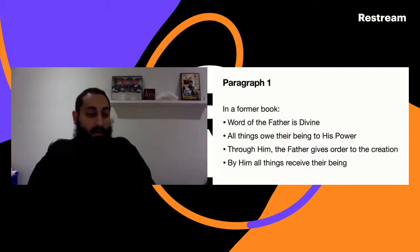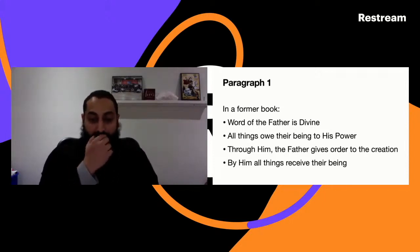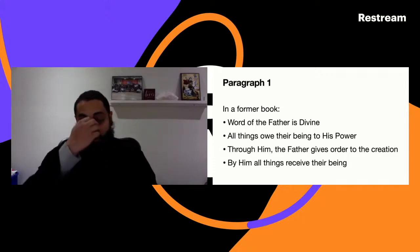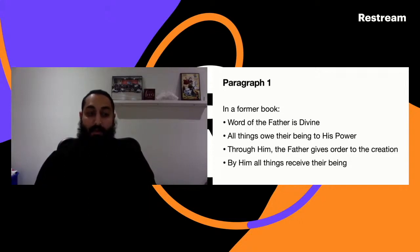On the Incarnation is made up of 57 paragraphs, each about a page or even less. It begins with a summary and introduction - a summary of the previous book and an introduction into this book. In a former book we have established the following: the Word of the Father is divine, all things owe their being to His power. Through Him the Father gives order to creation, and by Him all things receive their being.